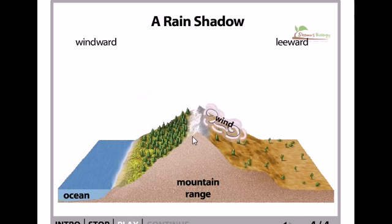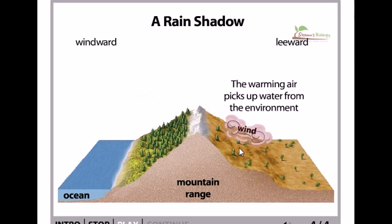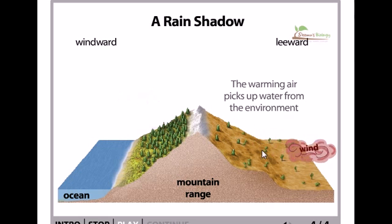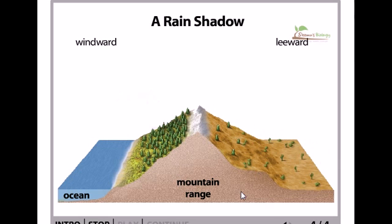This now dry air continues over the leeward side of the mountain — the right side. As the air descends the slope, it warms and picks up moisture from the environment. This leeward region remains dry because the air not only warms as it passes through, but also reclaims the moisture it had released on the windward side.